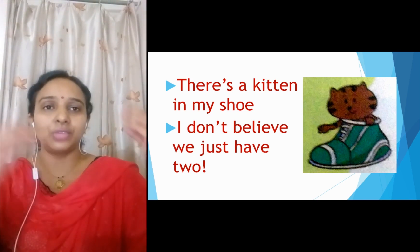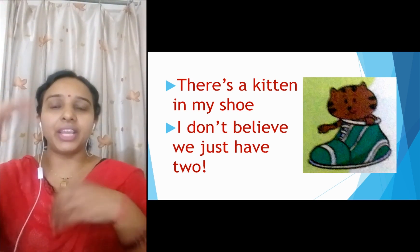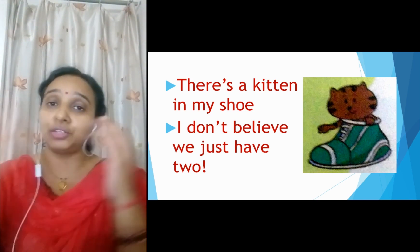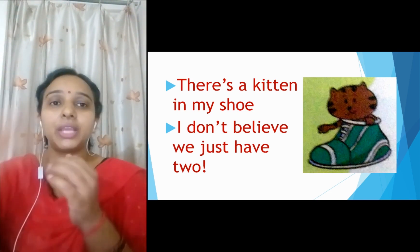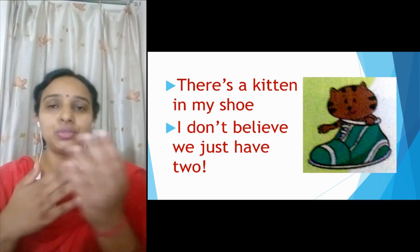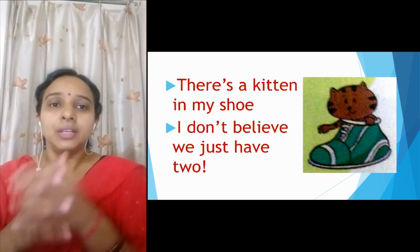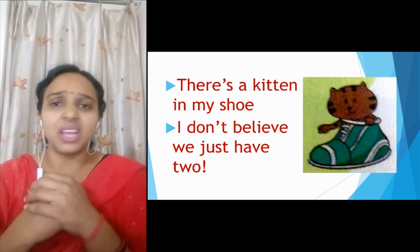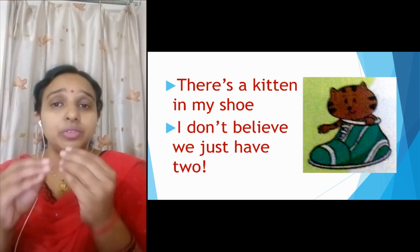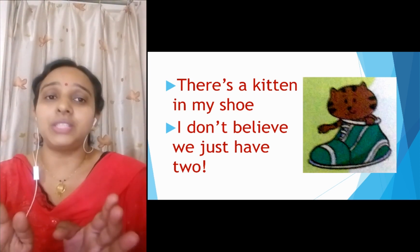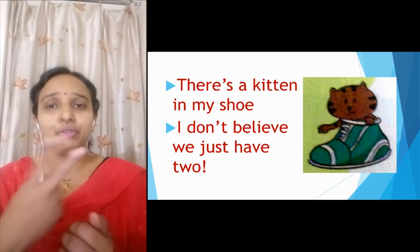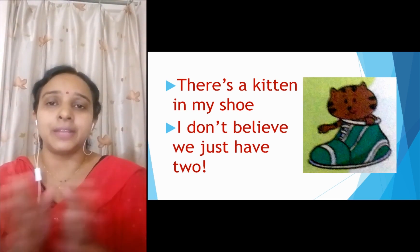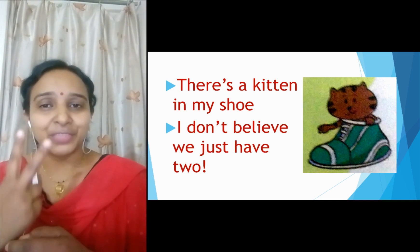Look, itna hai — ek uske head mein hai, fighting ho raha hai, tumbling down ho raha hai. And there is a kitten on my head — uske head pe hai. Koi one in a bread, then there is a kitten in the shoe. Then what is he thinking? I don't believe — usko vishwaas nahi ho raha hai ki they just have two. Usse lag raha hai ki har jagah kittens hai.